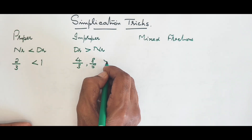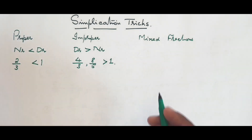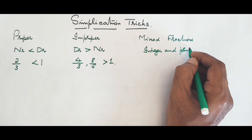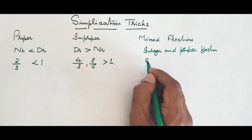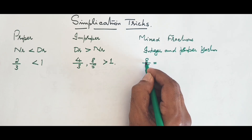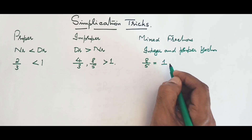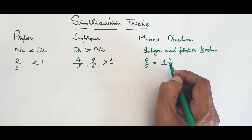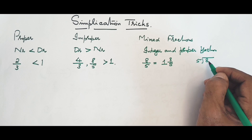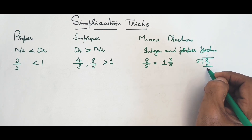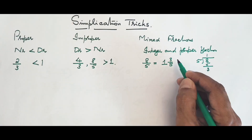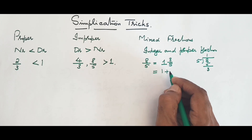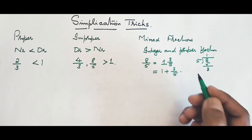Mixed fractions have both an integer and a proper fraction. For example, take the improper fraction eight divided by five. Five goes into eight once, and the remainder is three. So you write it as one and three over five. This means one is the quotient, three is the remainder, and five is the divisor. A mixed fraction basically means one plus three over five.